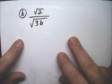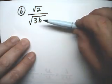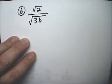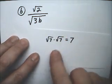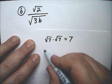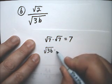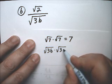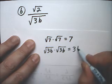We'll be doing the same thing in Example B. Here we have a radical in the denominator. And the same way that Radical 7 times Radical 7 is equal to 7, the square root of 3B times the square root of 3B equals 3B.